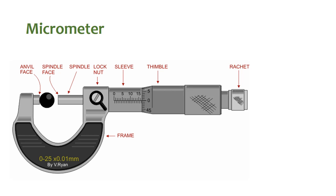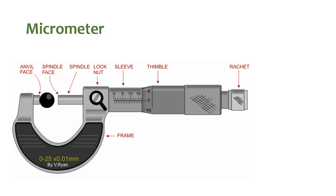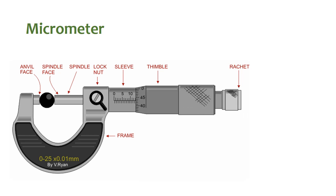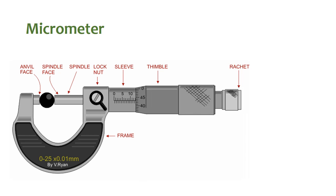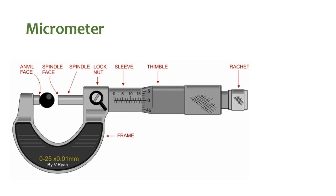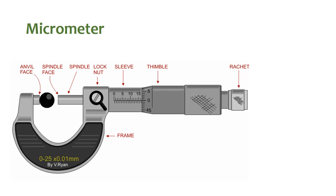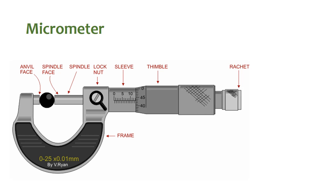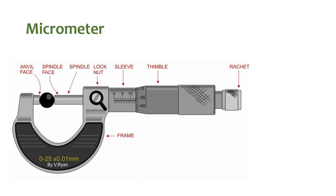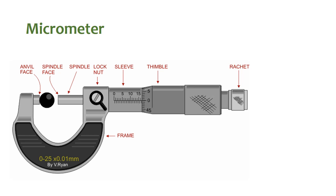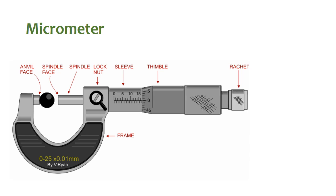If you see the sleeve you will be able to see the main scale's divisions on the sleeve, and if you see the thimble you will be able to find divisions in a circular shape which will give you a circular scale reading. If you move the ratchet you will be able to find out the point of incidence between the sleeve and the thimble, which gives you the point of incidence between the main scale and the circular scale. At that point you would be able to find out the main scale reading and the circular scale reading.